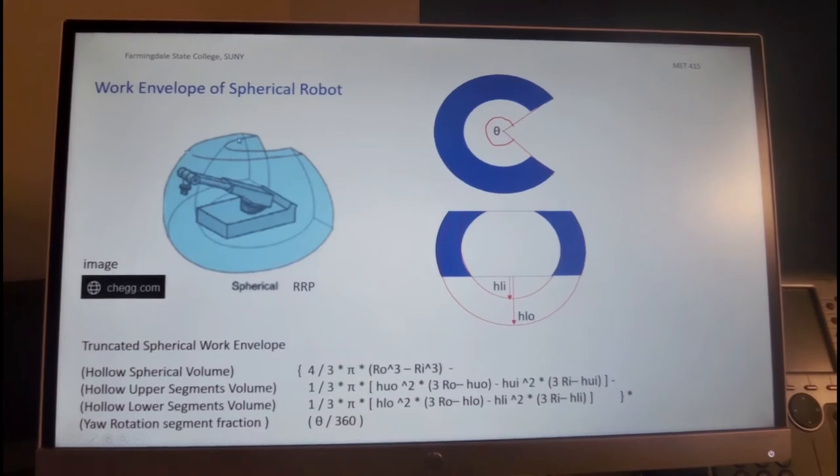Now the robot is limited in how high it can move and how low it can move. Therefore, the cylinder is truncated. And also in a yaw direction, the rotation is limited to a certain angle. So with that said, if we look at the cross-sectional view from the front, then we will see this cross-section here. And we will see cross-section on the other side, which is also being truncated by this wedge.